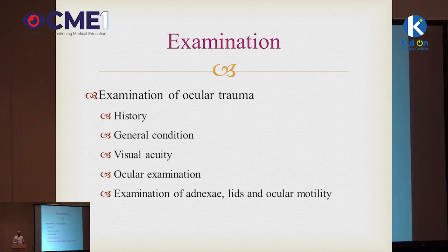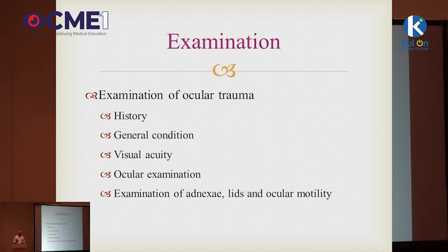How do we assess ocular trauma or globe rupture? The first thing in ophthalmology is to take a good history of how the trauma occurred, because that can identify whether there's an intraocular foreign body we might miss. I like to know when the trauma occurred, what exactly happened — was it an explosion, was the patient hit with a hammer — as well as the mechanism of injury, the patient's medical conditions, and whether they're on blood thinners, because that may result in a retrobulbar hemorrhage.